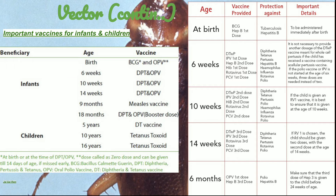At six weeks, the second dose of Hepatitis B, the first dose of Rotavirus vaccine, and the first dose of PCV (Pneumococcal Conjugate Vaccine) are given. These vaccines are administered according to the age of the baby to protect the child from various infections. At ten weeks, fourteen weeks, and six months, additional vaccines are also given.